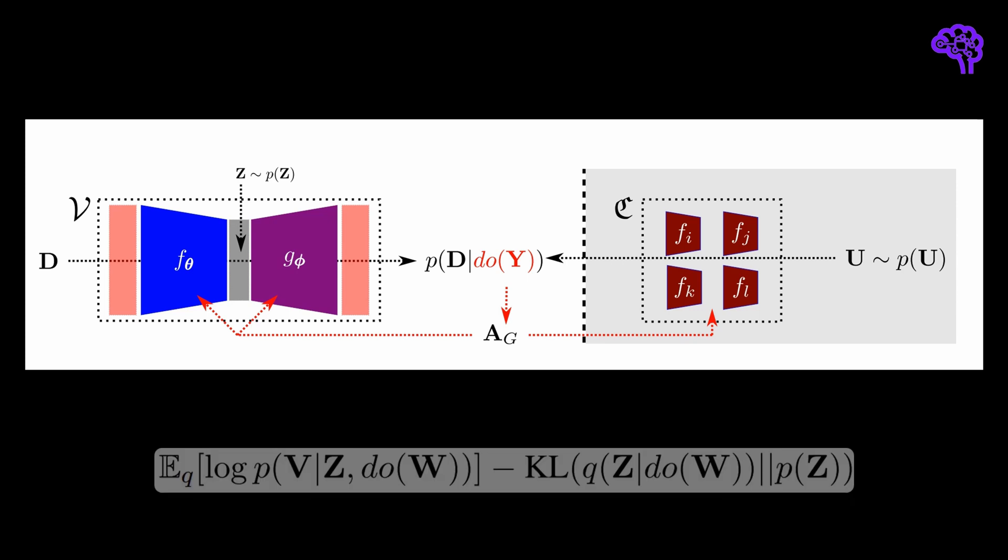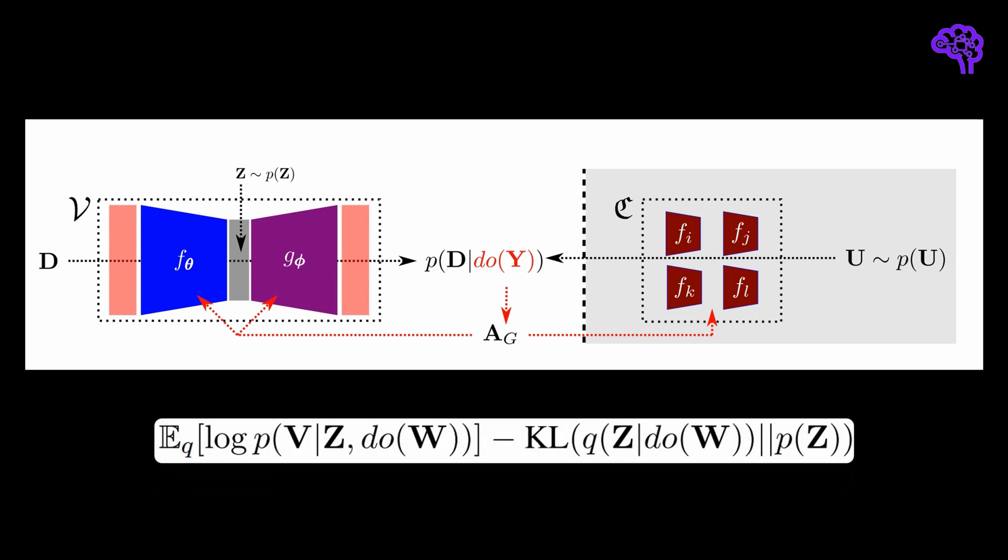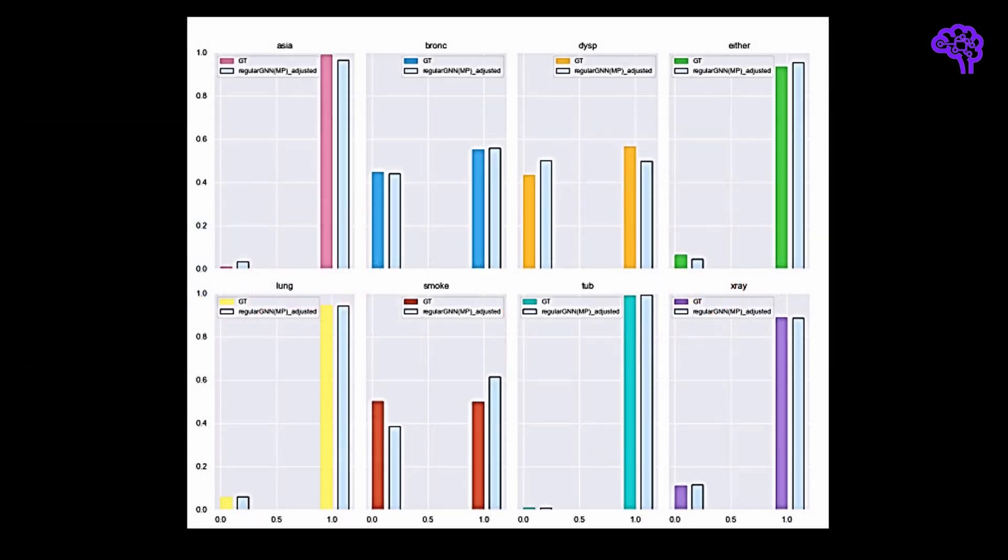This model is optimized with a modified variant of the ELBO criterion, which considers interventions for the variables of interest. The researchers test their neural causal models on several datasets. One of them is the Asia real-world dataset that contains relationships about visits to Asia and lung diseases. Their model is able to approximate the causal effects determined by DoCalculus applied on the structural causal model. There is a quite long appendix in the paper that discusses more results.